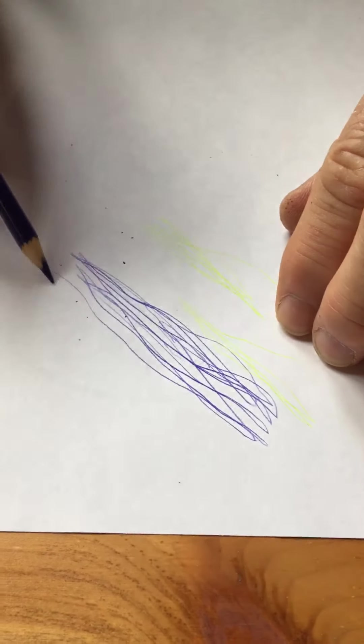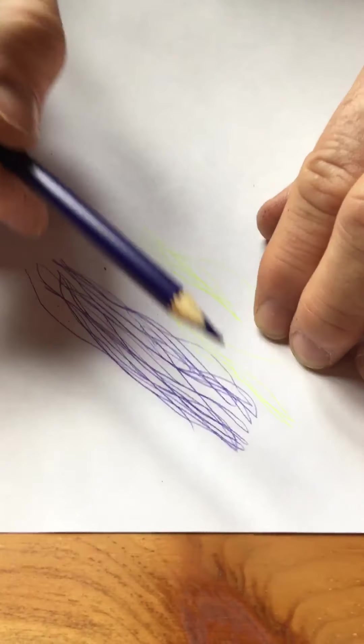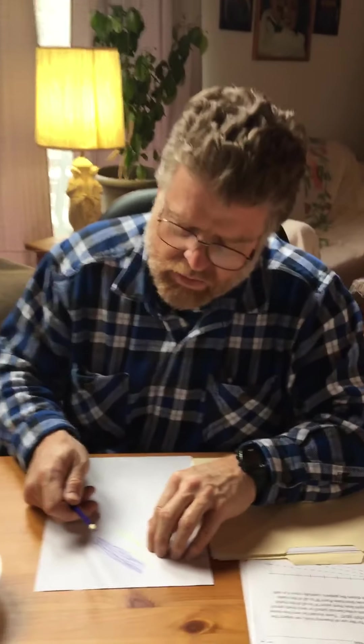If you spin the pencil while you make the line, it stays the same thickness. It doesn't wear down a flat spot. See that point in there? Okay, so that's how you sharpen a colored pencil with a blade. Hope you enjoyed that and have fun with your art.